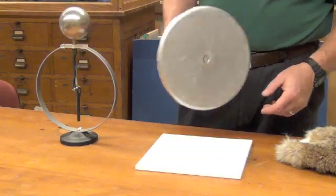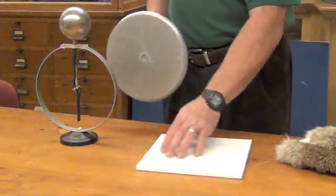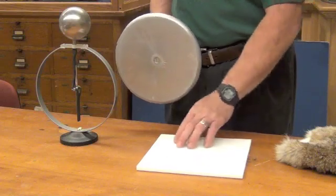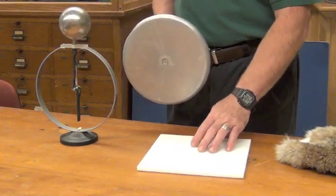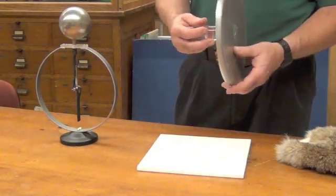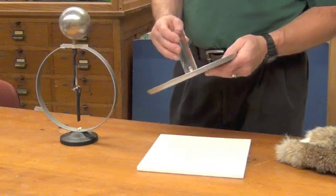Now an electrophorus is simply a piece of non-conducting material like plastic, in this case it's a piece of Teflon, and a conducting material, a flat metal plate with an insulating handle.